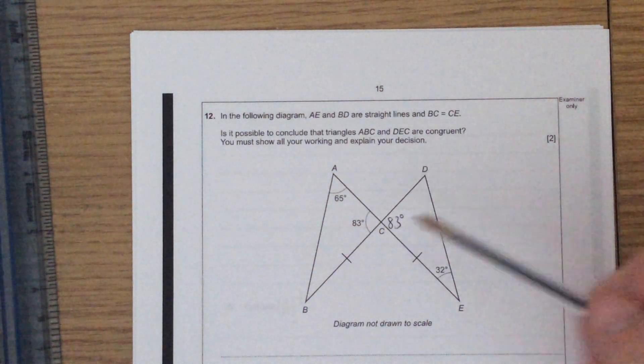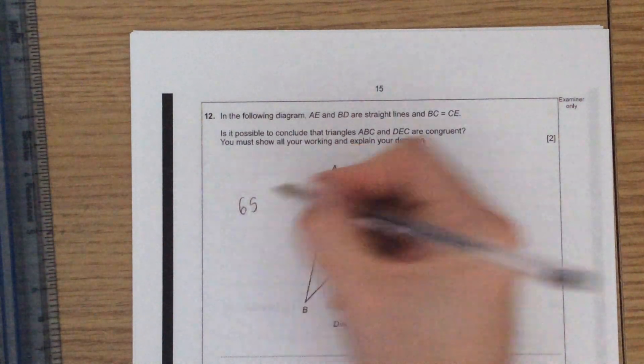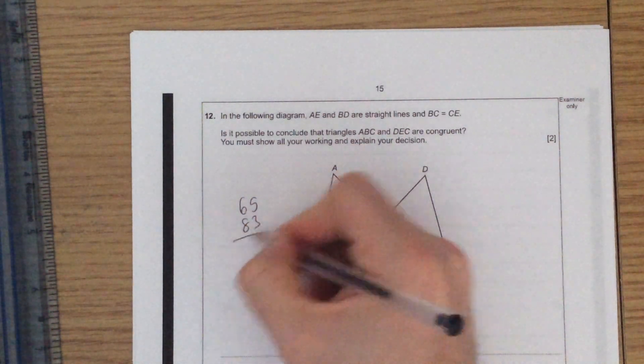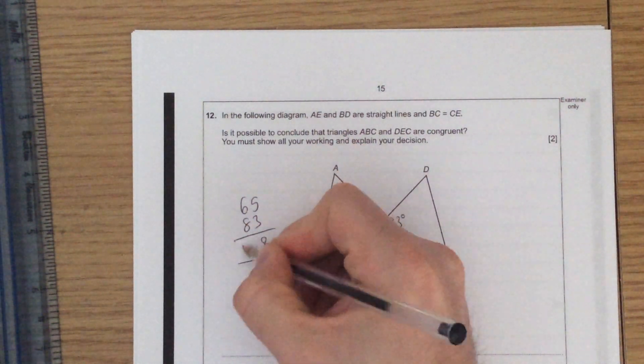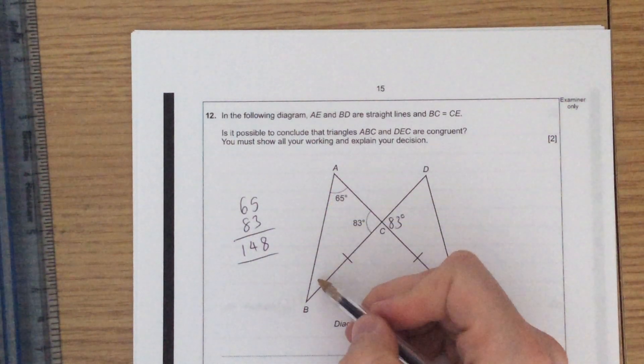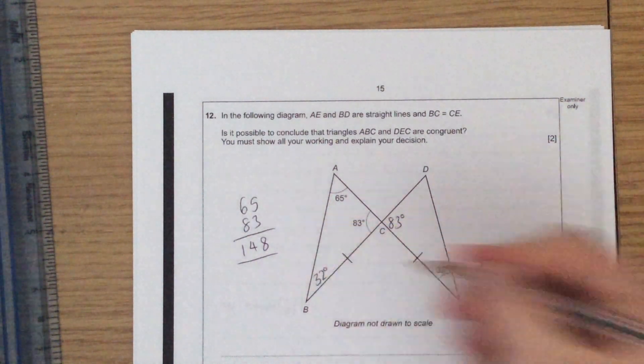Angles in a triangle add up to 180, so if I do 65 plus 83, I get 148, and then if I take that away from 180, I get 32 degrees here.